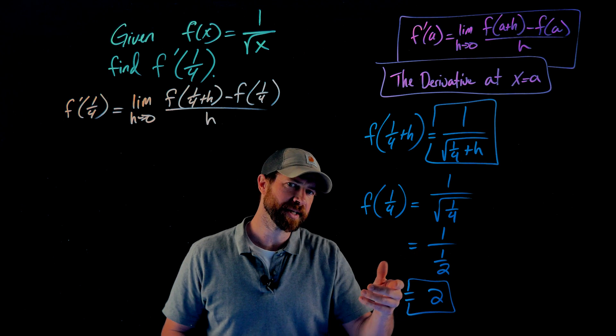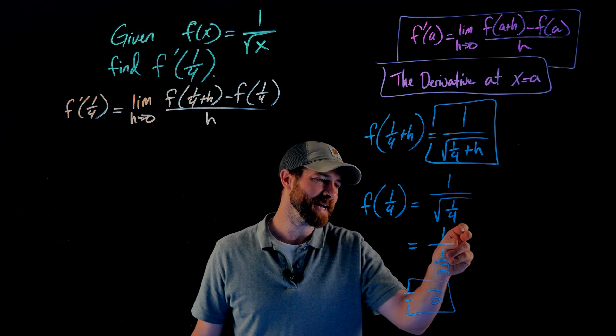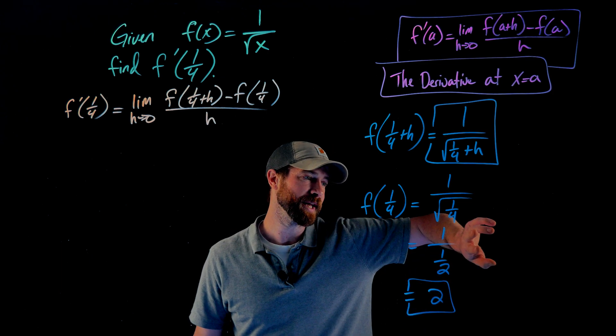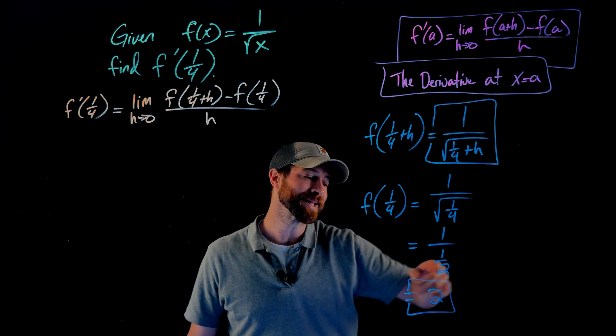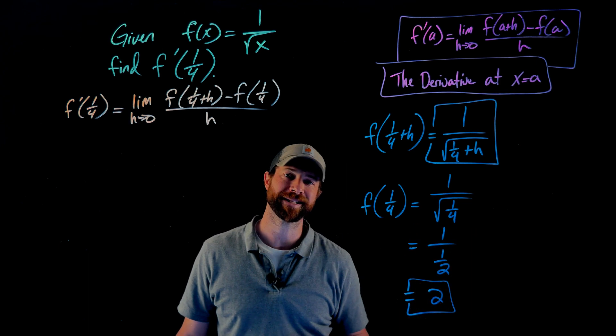If it's not so obvious to you, think of this as 1 divided by 1/2. When I divide by a fraction, I can flip it and multiply by the reciprocal. So what this actually becomes is 1 times 2, which is why this evaluates to 2.